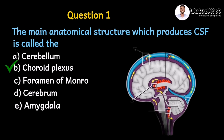Option C, the foramen of Monroe — from our previous video you know that the lateral ventricle (LV) and the third ventricle (TV) are the key structures here. The CSF flows from the lateral ventricles through the foramen of Monroe into the third ventricle. So the foramen of Monroe is the passage through which CSF flows — it does not produce CSF.